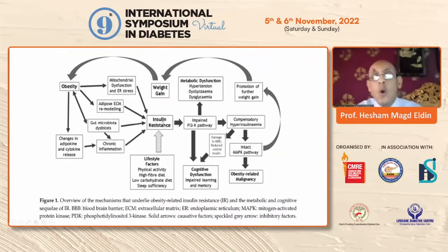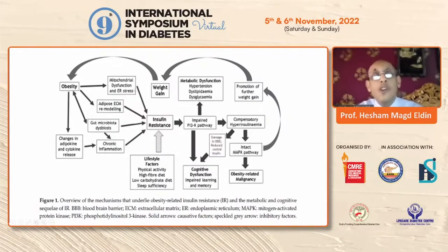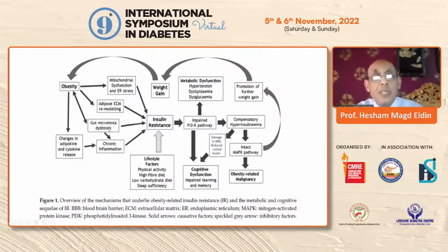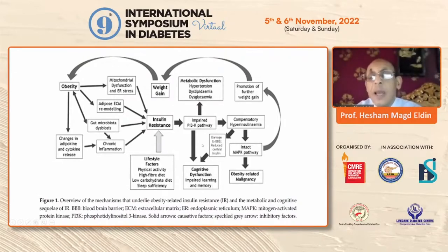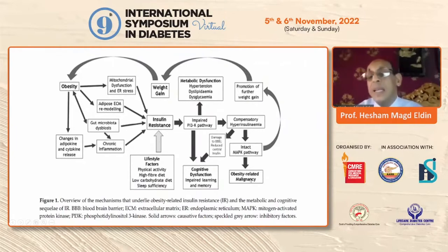Insulin resistance is at the core — the crossroad of obesity, metabolic dysfunction, cognitive dysfunction, and obesity-related malignancy. Obesity, through mitochondrial and endoplasmic reticulum dysfunction with adipose dysregulation, leads to gut microbiota dysbiosis and chronic inflammation, which impairs the PI3K pathway causing hypertension, dyslipidemia, and dysglycemia. In the brain, this causes cognitive dysfunction, impaired learning, and memory impairment. Hyperinsulinemia acting on the intact MAPK pathway causes obesity-related malignancy and drives further weight gain, creating a vicious circle.